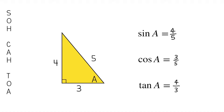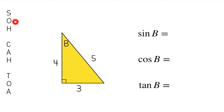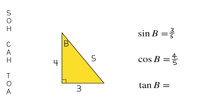Now what if we look at the same triangle but find the sine, cosine, and tangent of angle B? For sine of B, opposite over hypotenuse, the opposite leg is 3 — it's on the opposite side of the triangle from angle B — so sine of angle B is 3 over 5. Cosine of angle B is the adjacent, which is 4, over the hypotenuse 5, giving 4 over 5. And the tangent of angle B is opposite over adjacent, so we get 3 over 4.